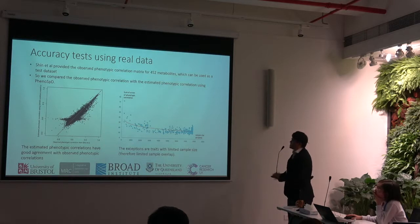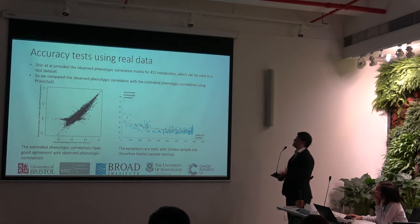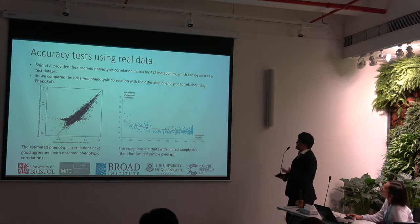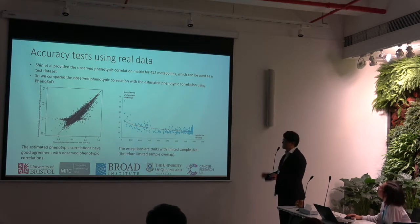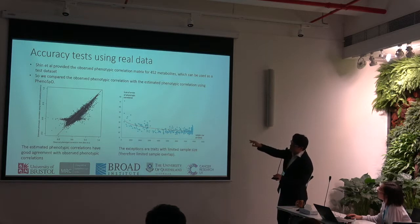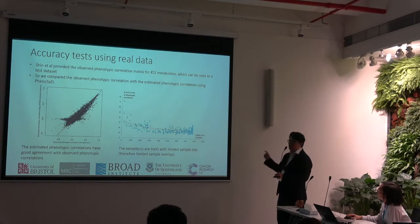Using real data: Shin et al. published a GWAS of 452 metabolites in 2014 and provided the observed phenotypic correlation matrix, which we used as a test dataset. We compared the observed phenotypic correlation with the estimates from PhenomeSPD. The agreement is very good overall. Some slight outliers exist — pairs with phenotypic correlation not captured by PhenomeSPD — and on investigation, those traits were measured in very small samples of only about 3,000, so the sample overlap was limited and accuracy was reduced.